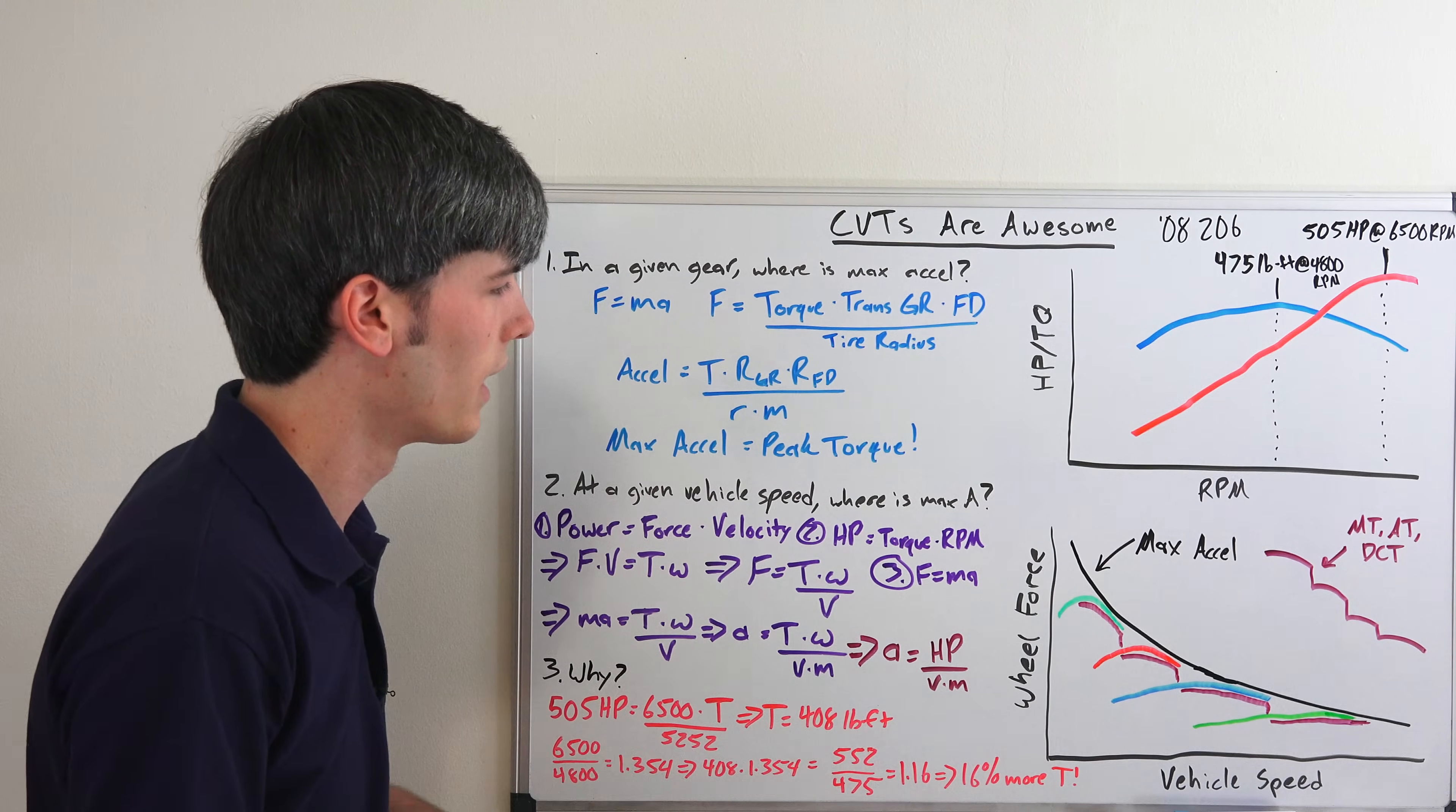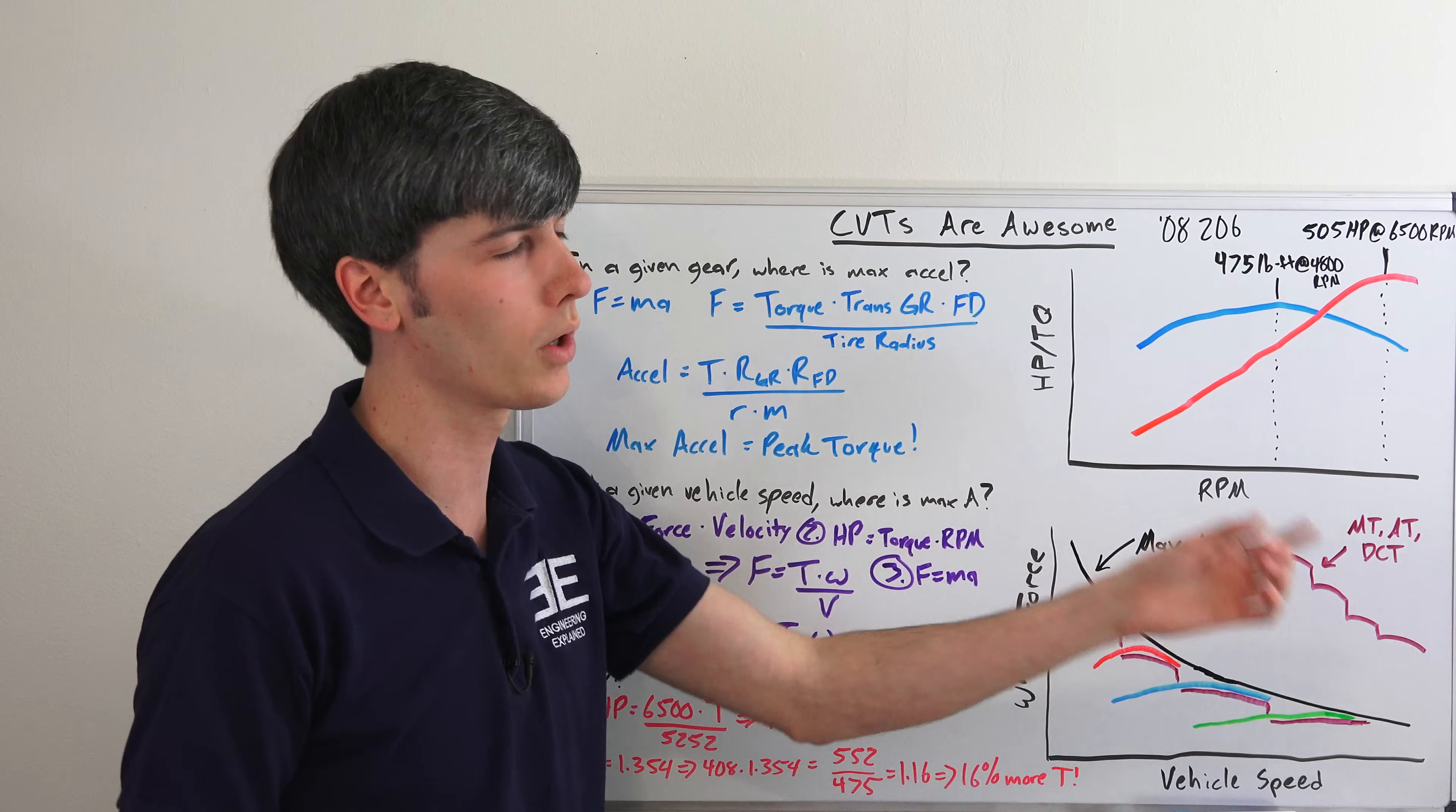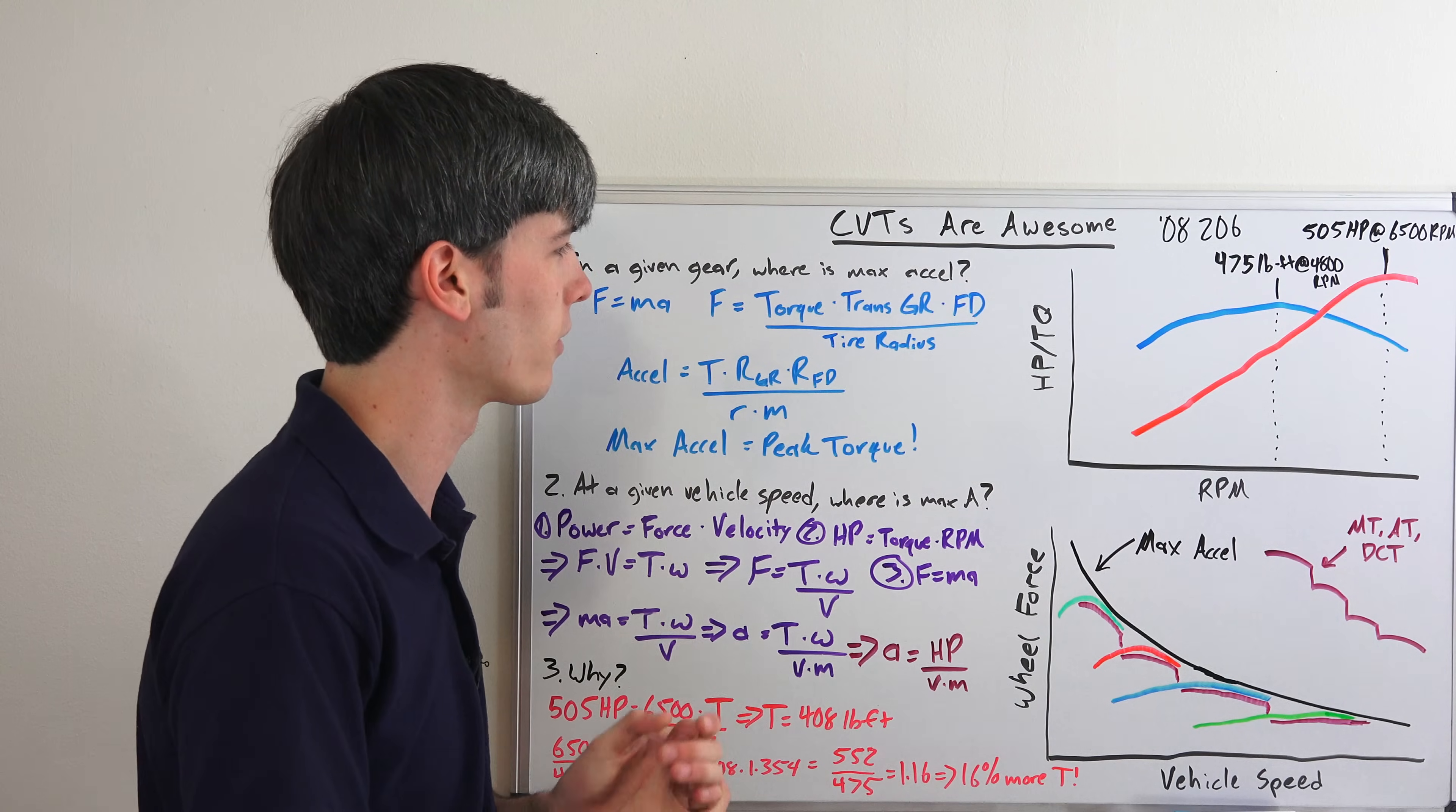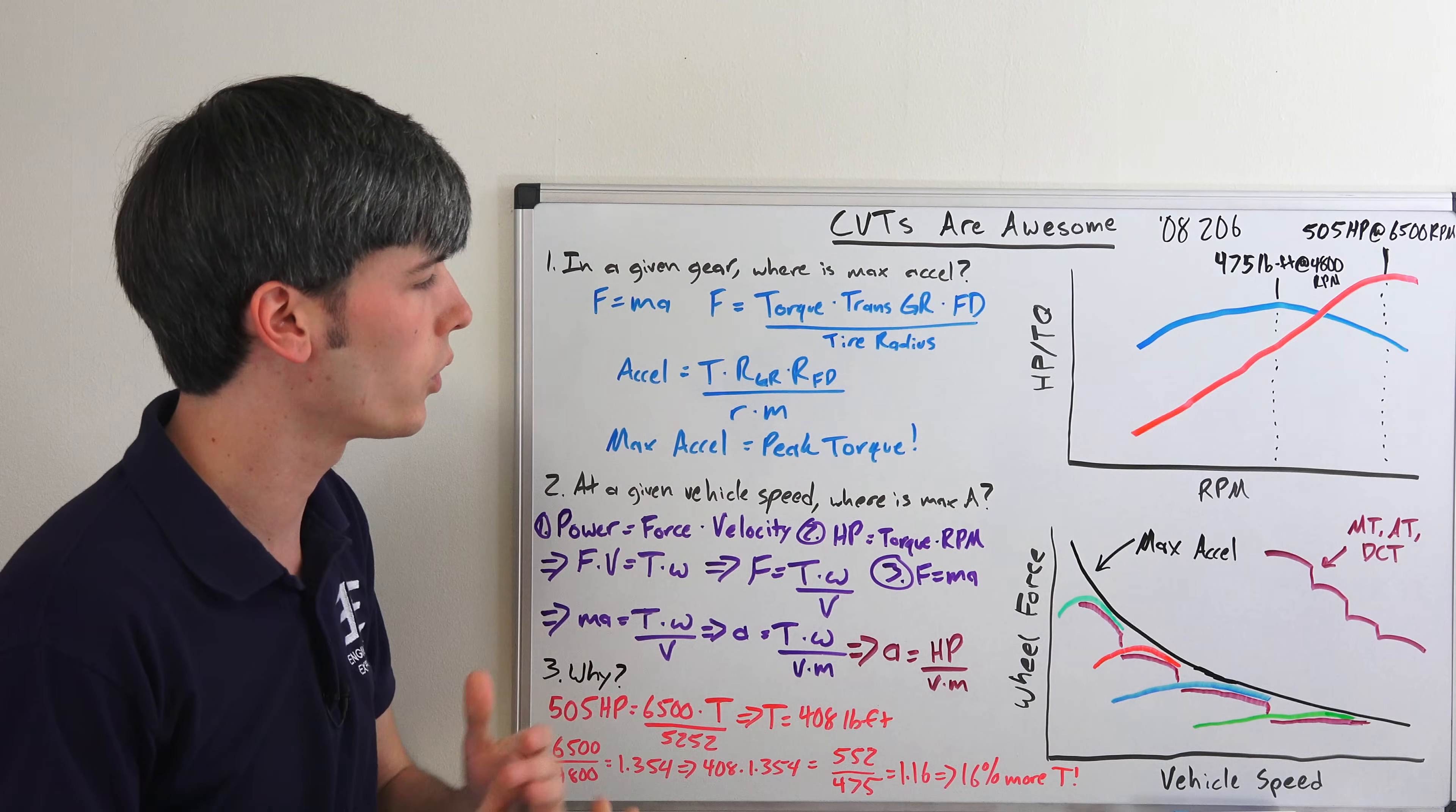But if you were to have a supercar with a CVT, it would be quicker than what the supercars are currently using with their dual clutch transmissions. So I hope you guys have learned something from this, hopefully just a slight ounce more respect for CVTs because they actually are really cool in how they work. I also do have a video illustrating how they work which you may want to check out.